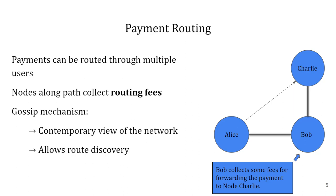In this example, Alice wants to pay Charlie but has no direct channel connected with Charlie. Therefore, Bob is used as an intermediary to forward the payment to Charlie, and Bob therefore collects some fees for doing so.